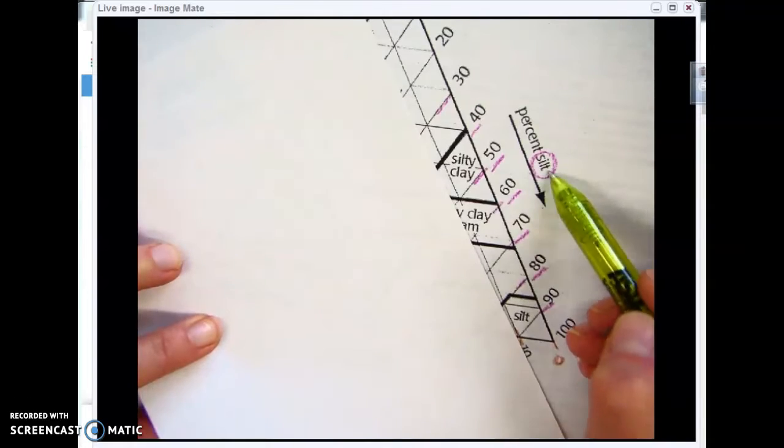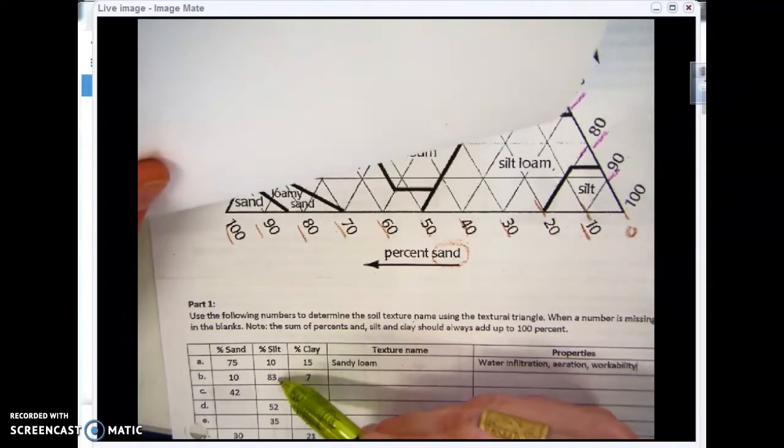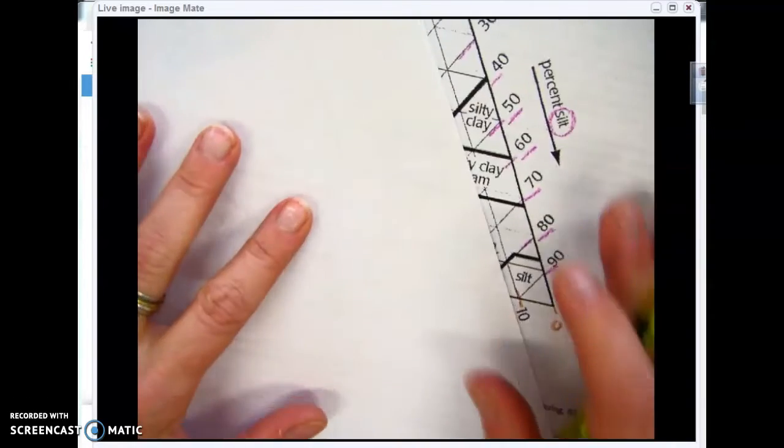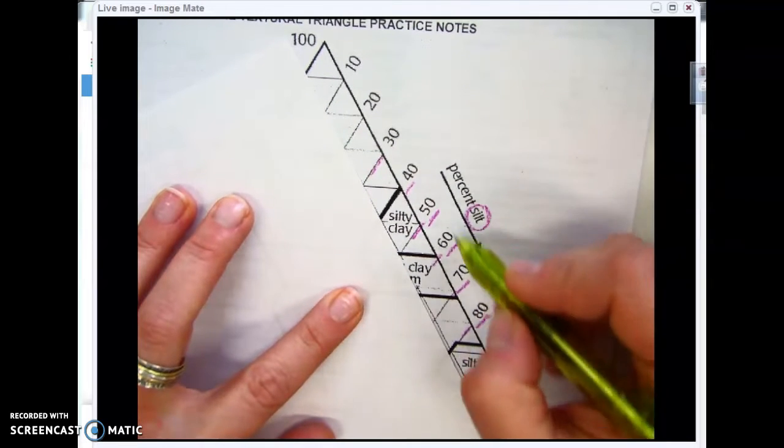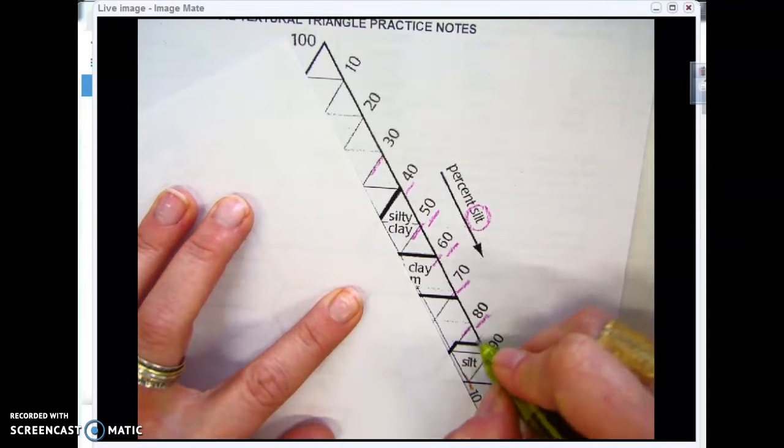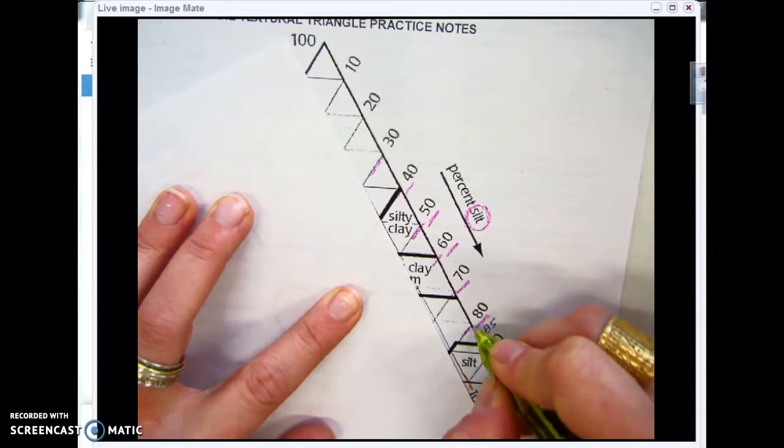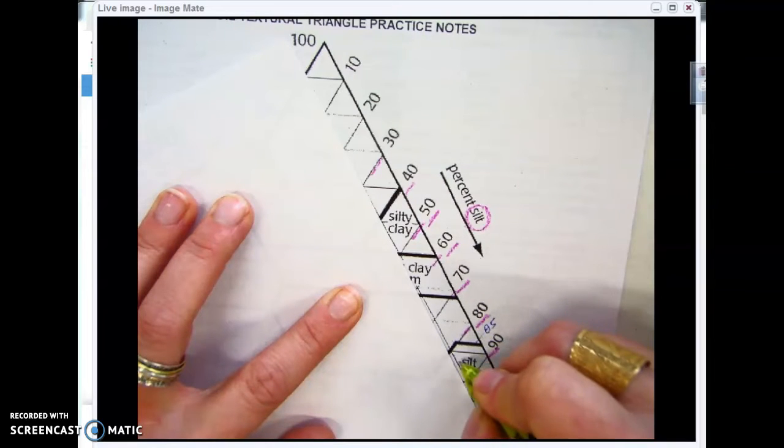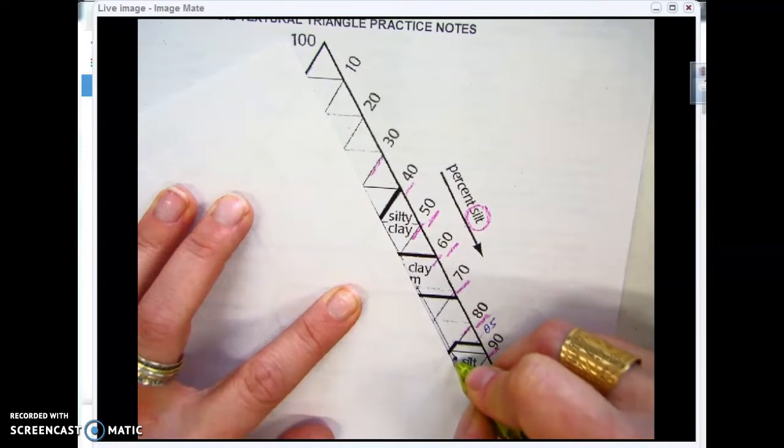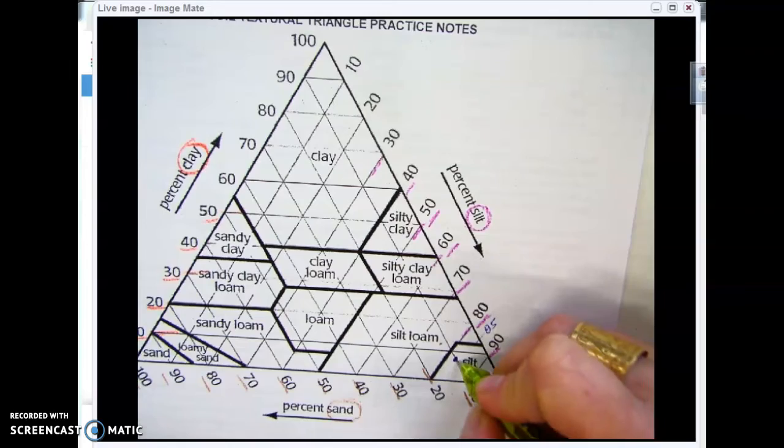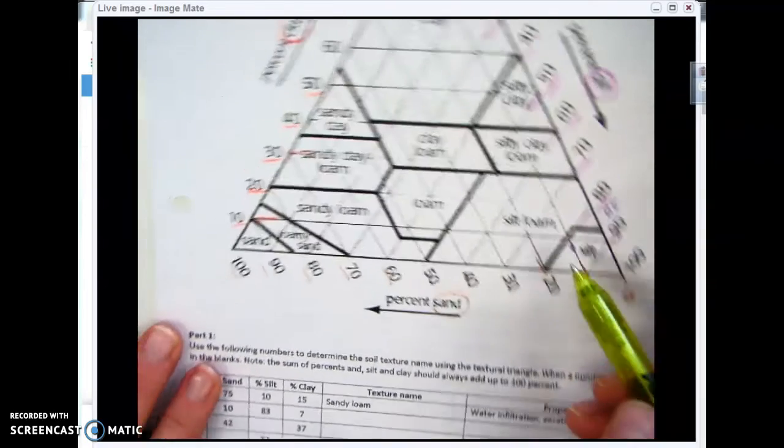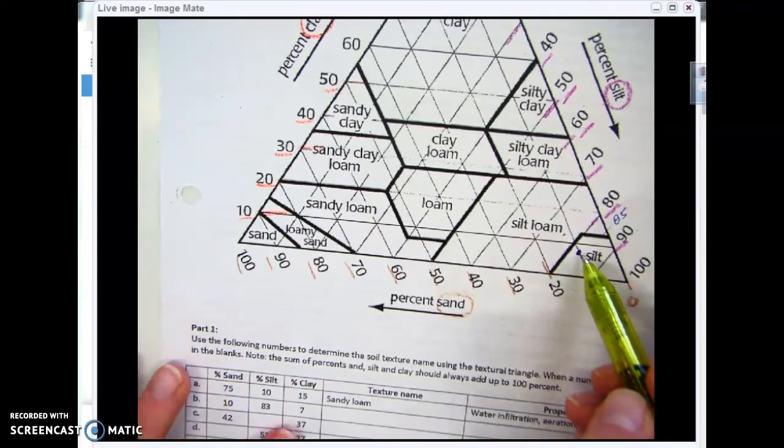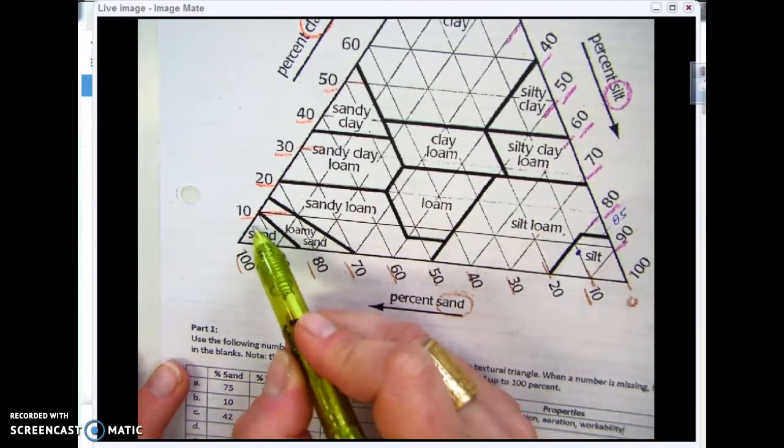The axis that I can see is silt, so I'm going to see that it's 83% silt. Keeping my sheet there on the 10% line, I'm going to look for 83% silt. 85% is roughly in there. So where 83% silt and 10% sand come together, that should also be where there is 7% clay.